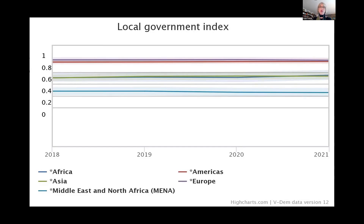The MENA region would be scoring below the 0.2 level. What a zero means in this index is there's no elected local governance, either at the mid-tier or at the local level. What a one means is that elected bodies or officials are not subject to interference from unelected officials and bodies. So it's looking at the relationship between elected and unelected and whether elected even exists.